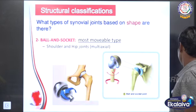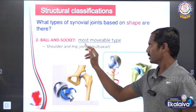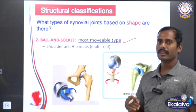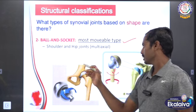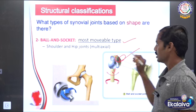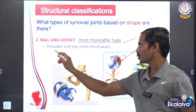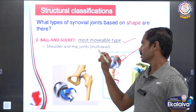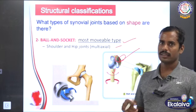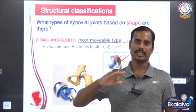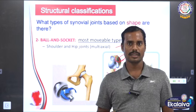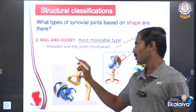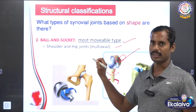Number two: ball and socket. Ball and socket is the most movable type of joint. Ball and socket joints are the shoulder and hip. This joint is multi-axial. Movements include rotation, flexion, extension, adduction, and abduction. Overall movement is greatest in the ball and socket joint.